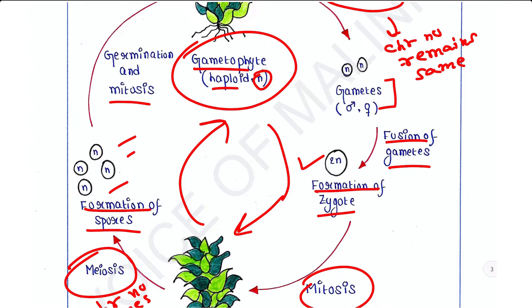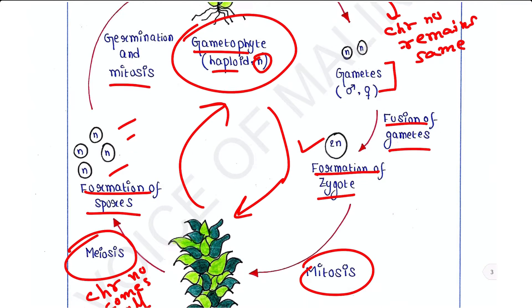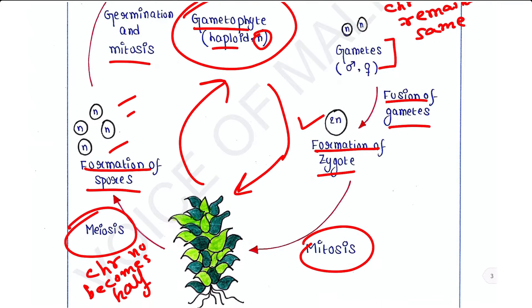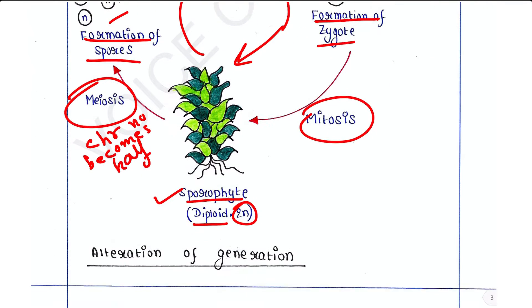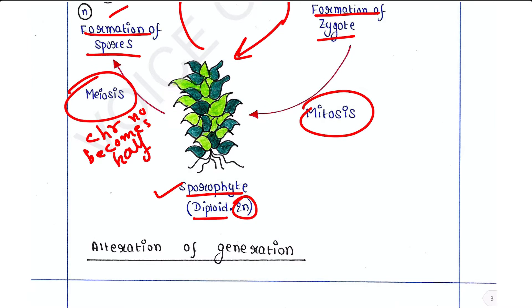This cycle from gametophyte to sporophyte and back to gametophyte is called alternation of generations.